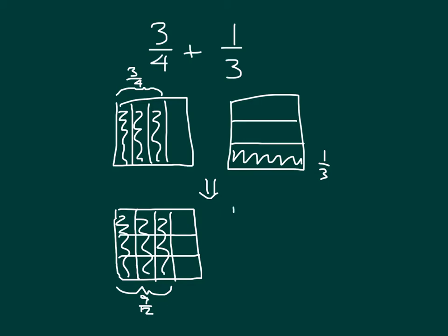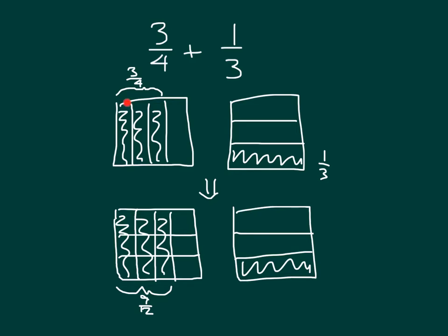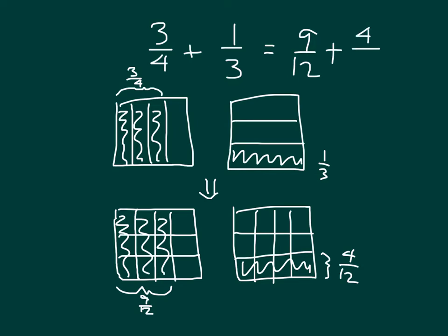For 1-3rd, much the same way, I'll start with 1-3rd and then draw four vertical lines to divide it into four parts. So 1-3rd is equal to 4 parts, and the total number of parts is again 12. So now I have 3-4ths, which is equal to 9-12ths, plus 1-3rd, which is equal to 4-12ths, and I'm adding them together.